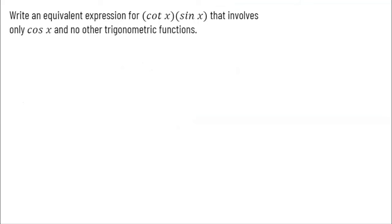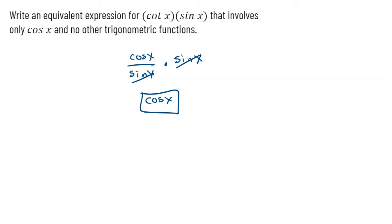This question says: write an equivalent expression for cotangent of x times sine of x that involves only cosine of x. Cotangent of x is cosine of x over sine of x, times sine of x. The sine of x's cancel to 1, and I just get cosine of x — exactly what the question asked.